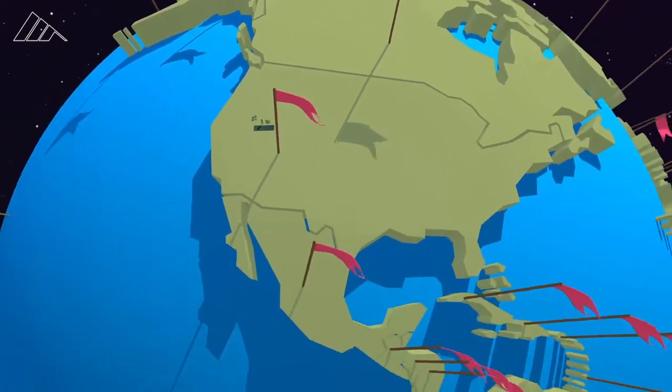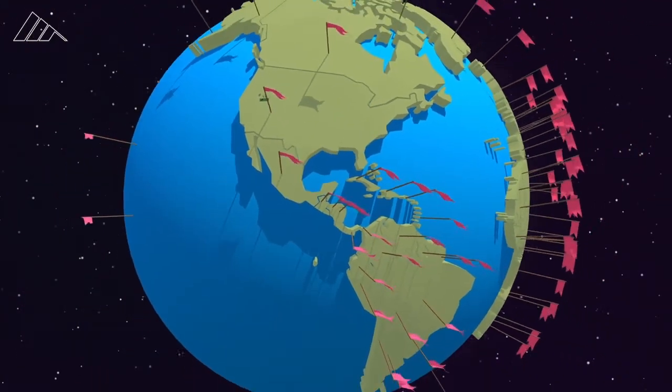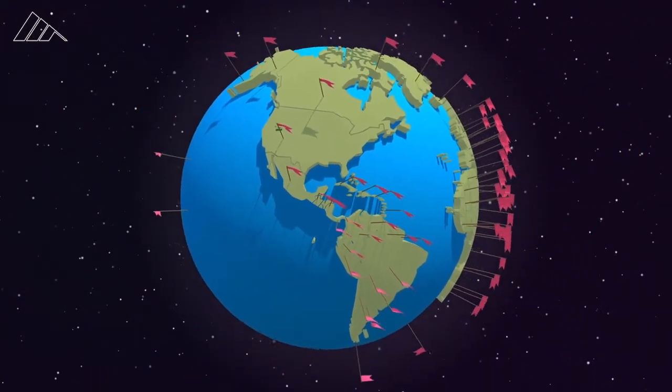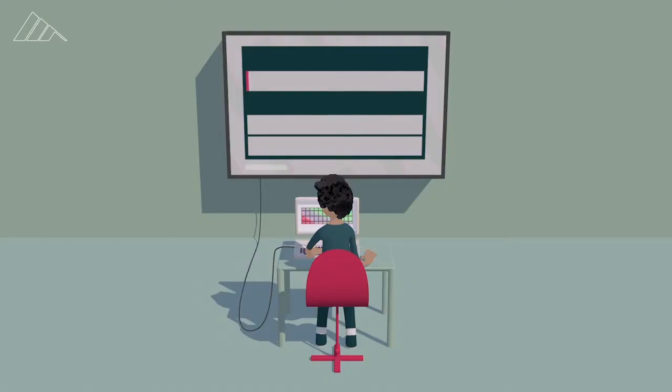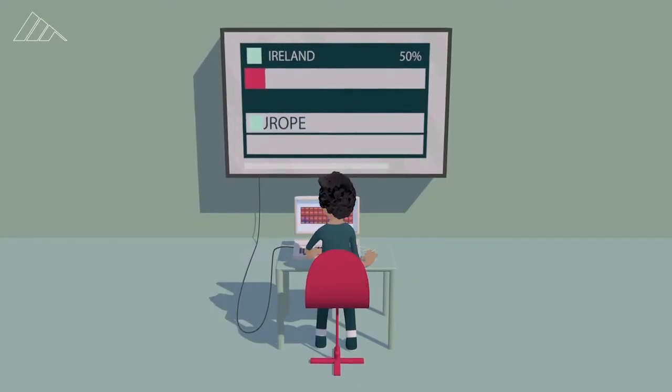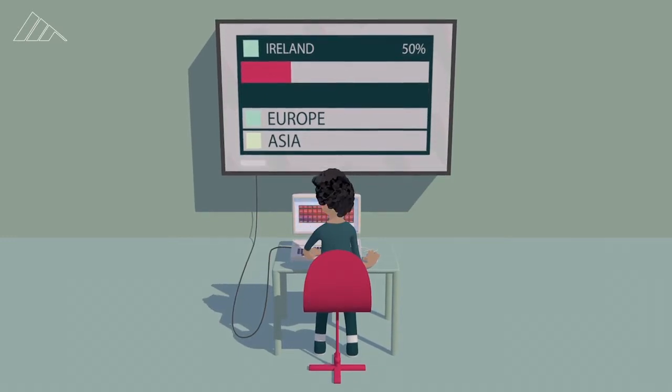Ancestry compares the data from your 700,000 markers to a database of ethnic markers drawn from more than 350 global regions. It runs this comparison 40 times to get a range of estimates from which to draw a person's final ethnicity estimate.